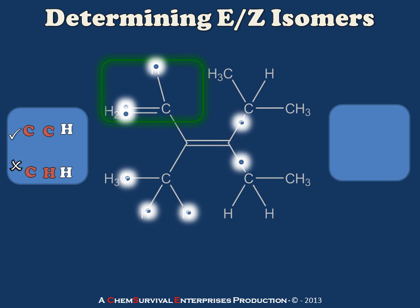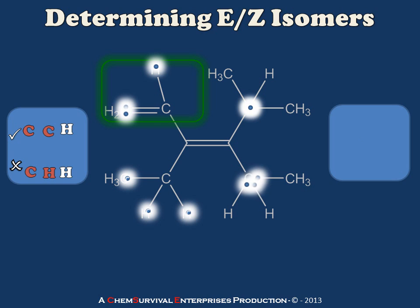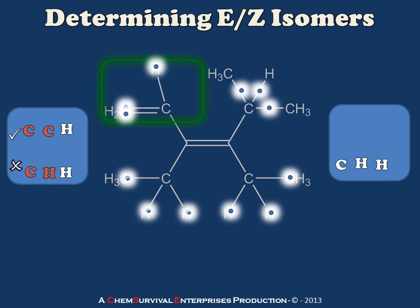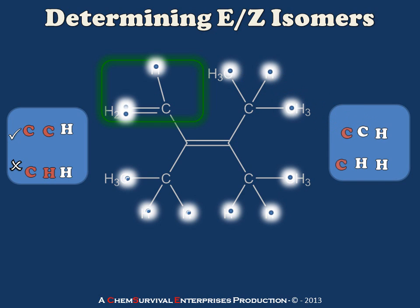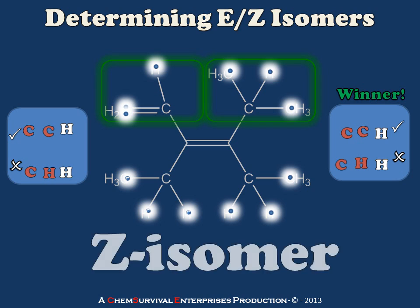For the right-hand side, we go through the exact same exercise as in the previous example: moving out one bond to find carbons are tied, then moving out a second bond. The lower group gives a list of C, H, H, and the top gives C, C, H. By comparing these lists, we can determine our winner. In this case, both of the higher priority substituents are at the top. Therefore, we would call this a Z isomer.